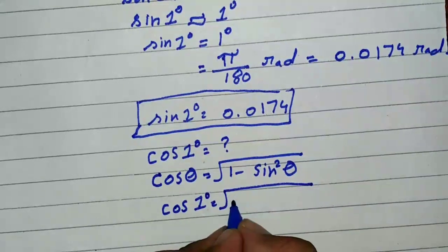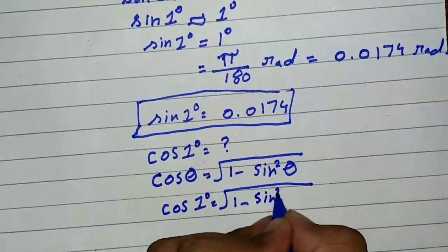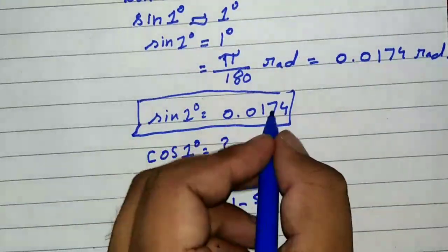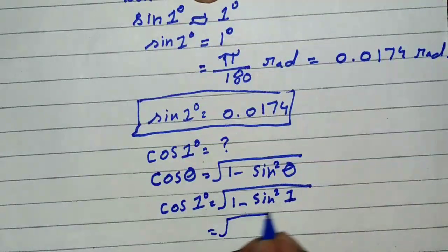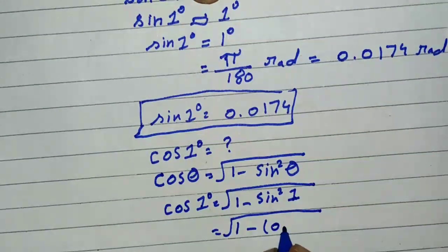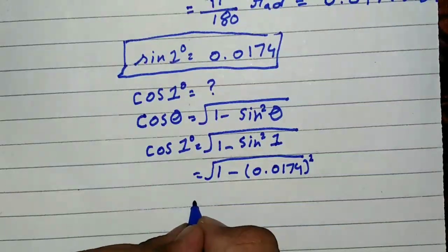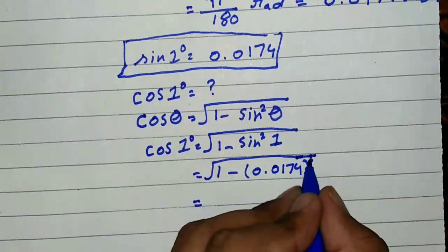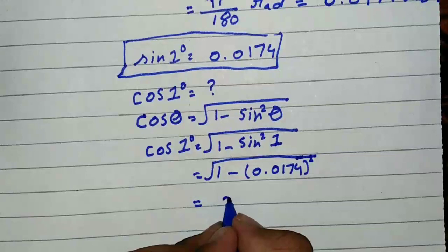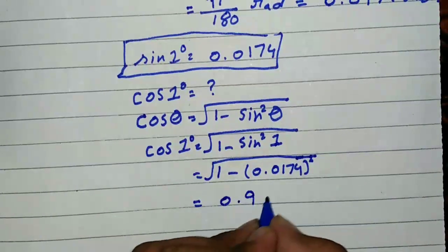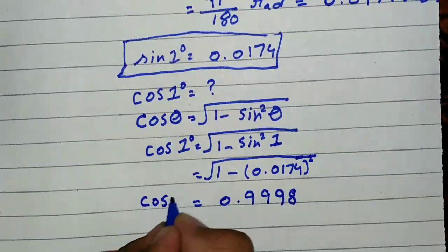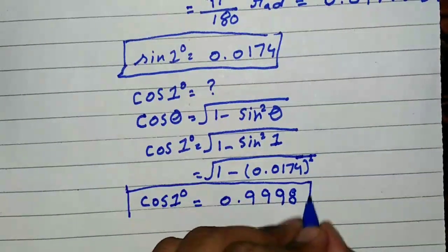We know that the value of sine one is 0.0174, so this becomes square root of one minus 0.0174 squared. By simplifying it, we get the value of 0.9998, which equals cos one degree.